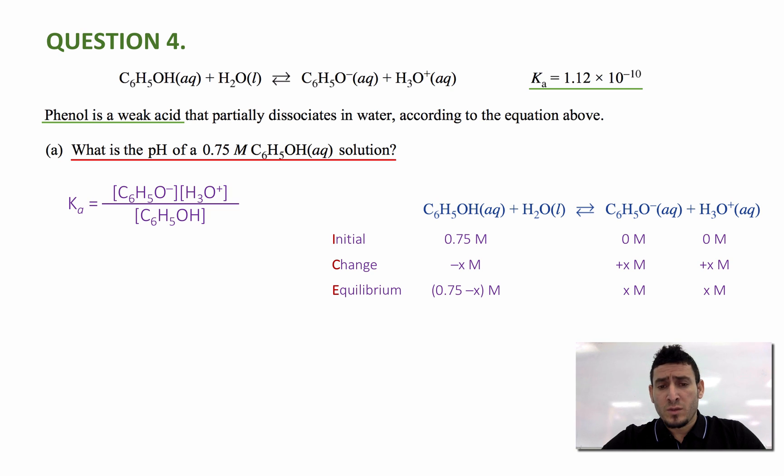These are the equilibrium concentrations. I can substitute them in the expression of Ka and use the value of Ka. So I will end up having 1.12 times 10 to the power minus 10 equals to X squared, divided by 0.75 minus X. Using a calculator, I can solve for X. I find X equals 9.2 times 10 to the power minus 6 molar.